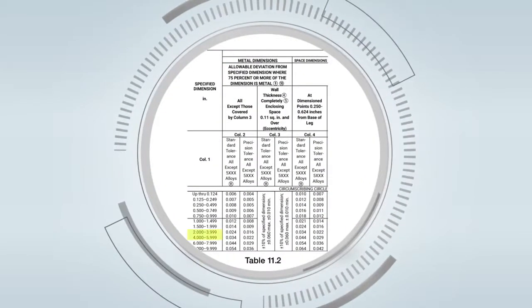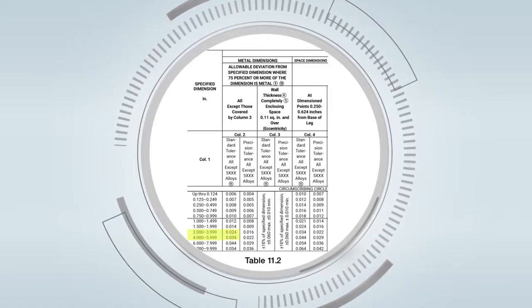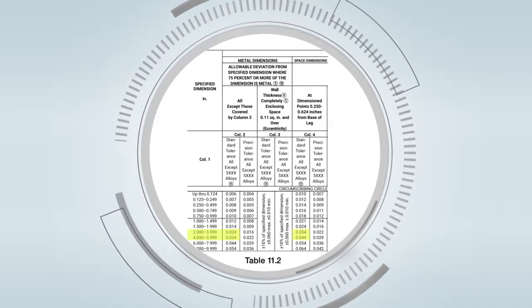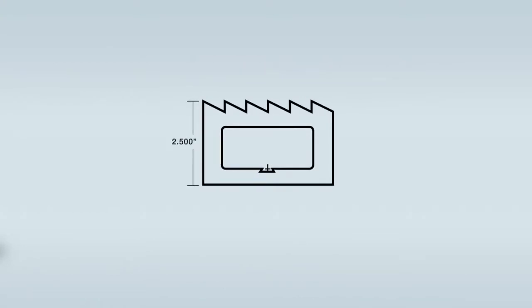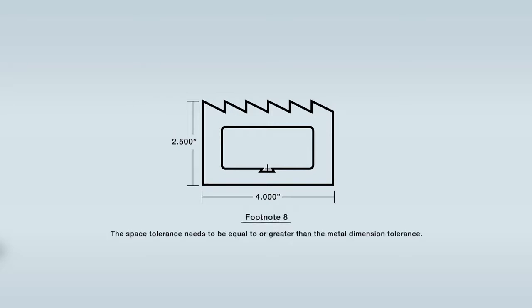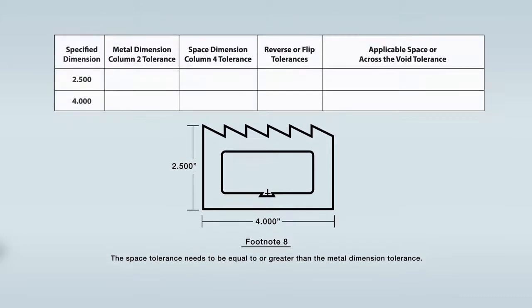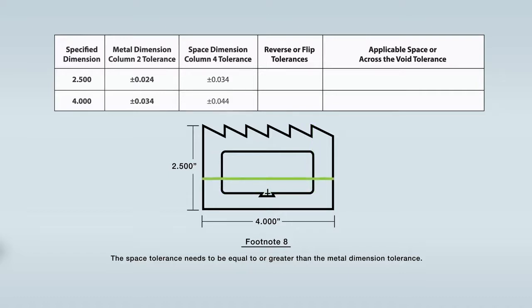For the 2.5 inch depth and 4 inch width dimensions of this hollow profile, there is a metal dimension tolerance found in column 2 and also a space dimension tolerance across the void found in column 4. Using column 2, the 2.5 inch depth dimension has a metal dimension tolerance of plus or minus 0.024 inches, and the 4 inch width dimension has a metal dimension tolerance of plus or minus 0.034 inches. Using column 4, the 2.5 inch depth dimension has a space dimension tolerance of plus or minus 0.034 inches, and the 4 inch width dimension has a space dimension tolerance of plus or minus 0.044 inches.